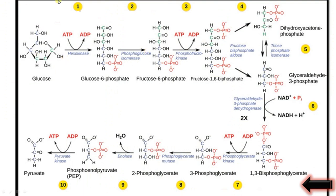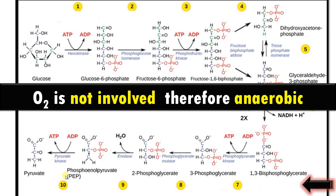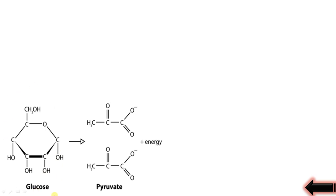Question number two: is glycolysis aerobic or anaerobic? Glycolysis is a 10-step process where glucose splits up to form two pyruvate molecules with the release of energy as ATP. In all these processes, oxygen is not involved. Therefore, glycolysis is anaerobic, but it can happen in the presence or absence of oxygen.